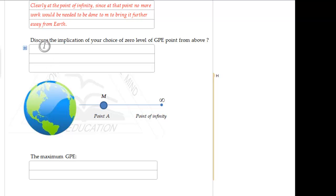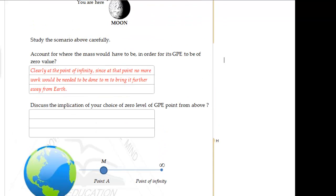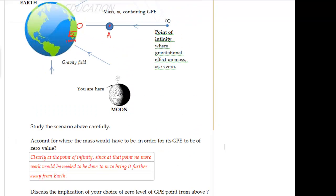Now, the next question that we want to discuss is, I want you to think about the implication of the choice of the zero level of GPE as we saw just now, at this point. What is the implication? What is the consequence of now defining a new zero point, zero GPE point? We're now saying that the zero GPE point is no longer on the Earth's surface, but rather it's at the point of infinity, a point whereby there is zero effect by the gravitational system on that mass. What is the implication?